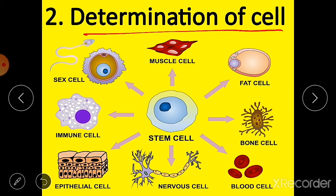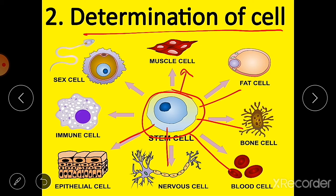Second, the nucleus plays a crucial role in the determination of the cell — deciding what form of work the cell will do on maturity. It determines the way a cell will develop and what form it will exhibit on maturity by directing the chemical activities of the cell. For example, a stem cell may develop into a muscle cell, fat cell, bone cell, blood cell, nervous cell, epithelial cell, immune cell, or sex cell — all decided by the nucleus.